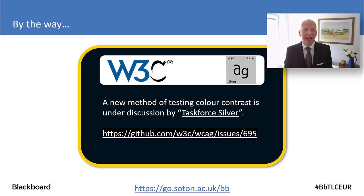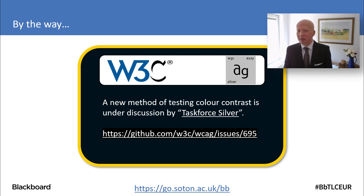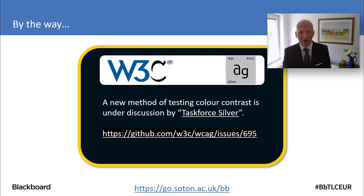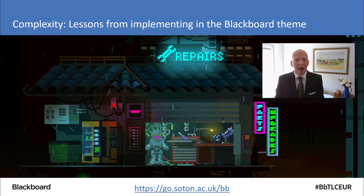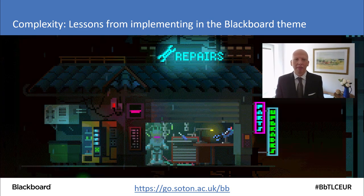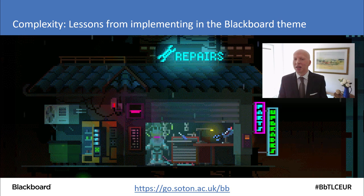I mentioned the next generation of accessibility guidelines. There will be a new method of testing colour contrast — there's actually quite a lot of heated discussion about some perceived failings with the calculation currently used for testing colour contrast. But once you start looking into the detail of implementing this in your Blackboard theme, there are areas of complexity you might not consider at first. In the next part of the presentation, I'm going to try to highlight where some of that complexity is.